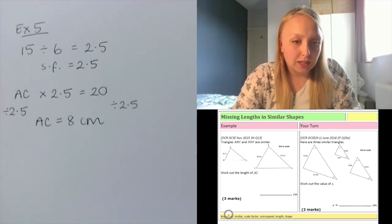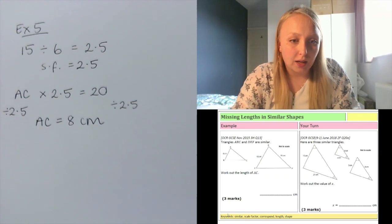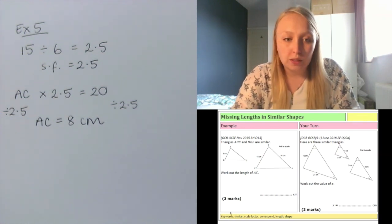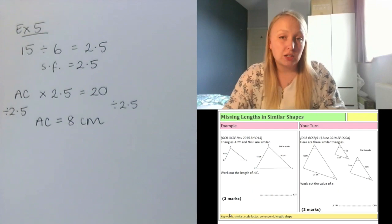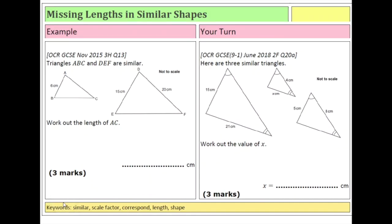Have a look at the question on the right hand side. You'll see there are three triangles in this question instead of two — it's a little bit trickier. I'll give you a hint: you'll have to apply the scale factor twice. Find the relationship between the big triangle and the medium triangle first, before moving on to the small triangle where your missing side is. Pause here to give yourself time, then we'll work through the answer.